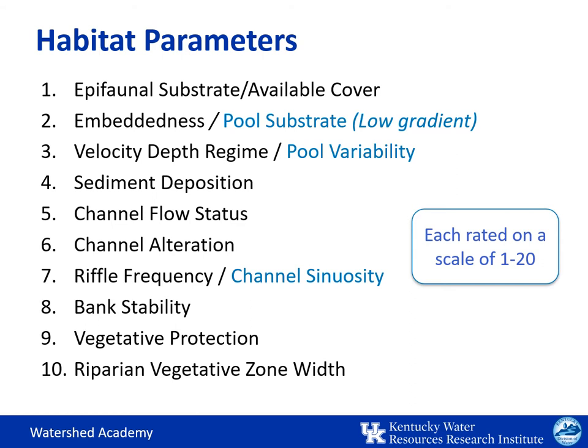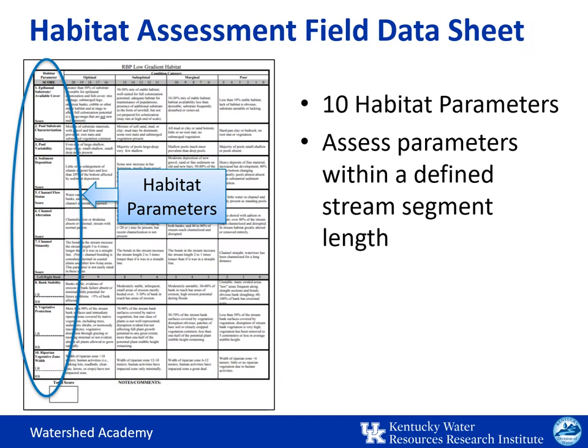Using your field data sheet, you evaluate each of the habitat parameters within a defined stream segment length. We look at the individual features and determine how well they are functioning individually — it may be helpful to imagine the stream from a macroinvertebrate's perspective. These are then combined into one overall measurement of how livable the stream is for stream animals. Performing the habitat and biological assessments annually will help us see changes over time that could affect stream health, which is why it's important to be as consistent as possible each time these assessments are performed.